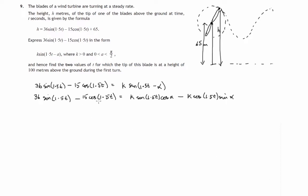Since this left-hand side and right-hand side are identical, let's look at the term sine 1.5t, which on the left is multiplied by 36. On the right, the term with sine 1.5t is multiplied by k and cos alpha.